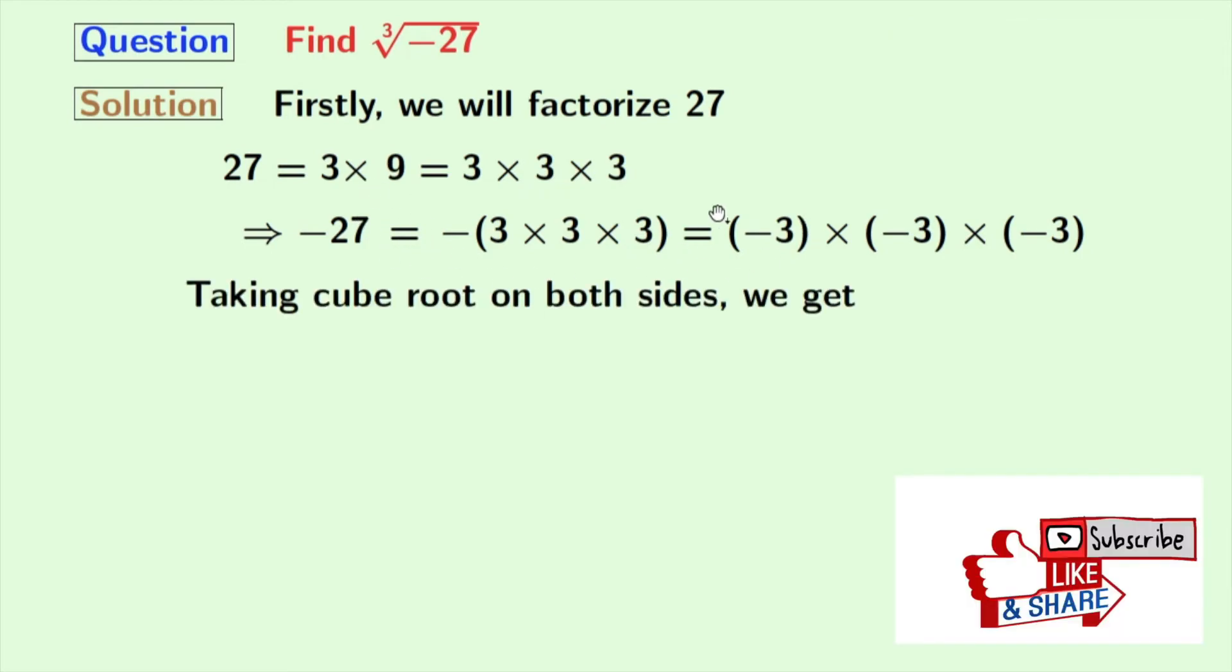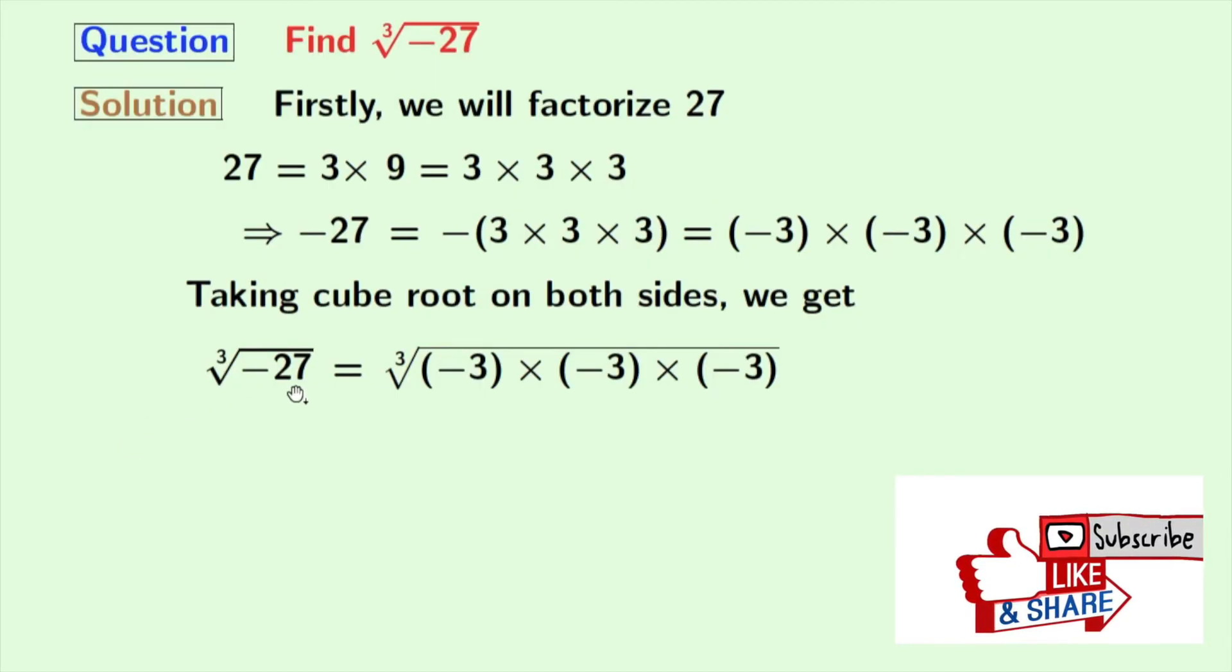Doing that, we get cube root of minus 27 equals cube root of minus 3 times minus 3 times minus 3. From this we get minus 3.